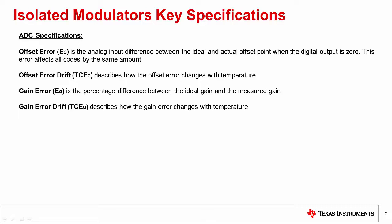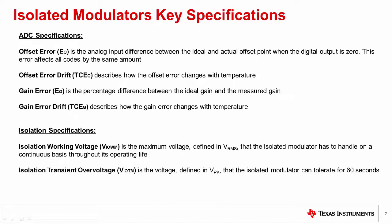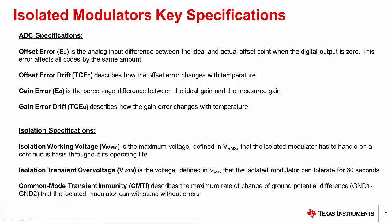Now we will go over some common isolation specifications. First, we will consider isolation working voltage, which is the maximum voltage defined in volts RMS that the isolated modulator has to handle on a continuous basis throughout its operating life. Next, isolation transient overvoltage is the voltage defined in volts peak that the isolated modulator can tolerate for 60 seconds. Lastly, we have to define the common mode transient immunity, or CMTI, which describes the maximum rate of change of ground potential difference that the isolated modulator can withstand without errors.